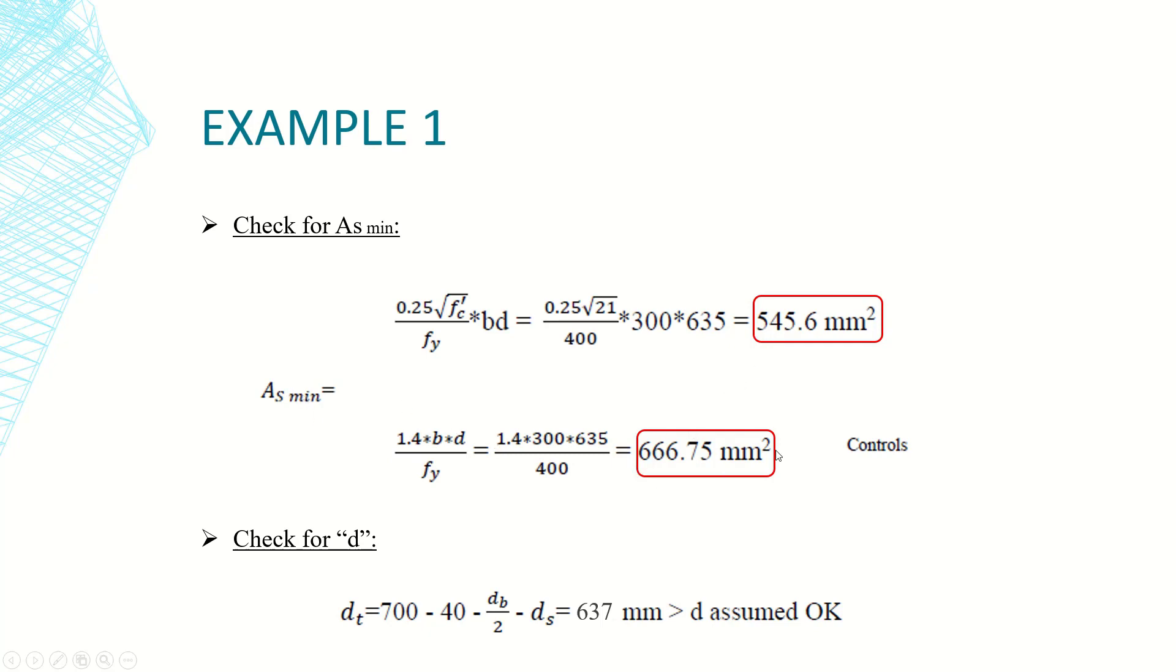This is rho minimum and by multiplying it with b times d I get As minimum. We choose the larger value which is 666.75 approximately millimeters squared. This controls but it's still less than As, so I'm on the safe side. This is for As minimum.